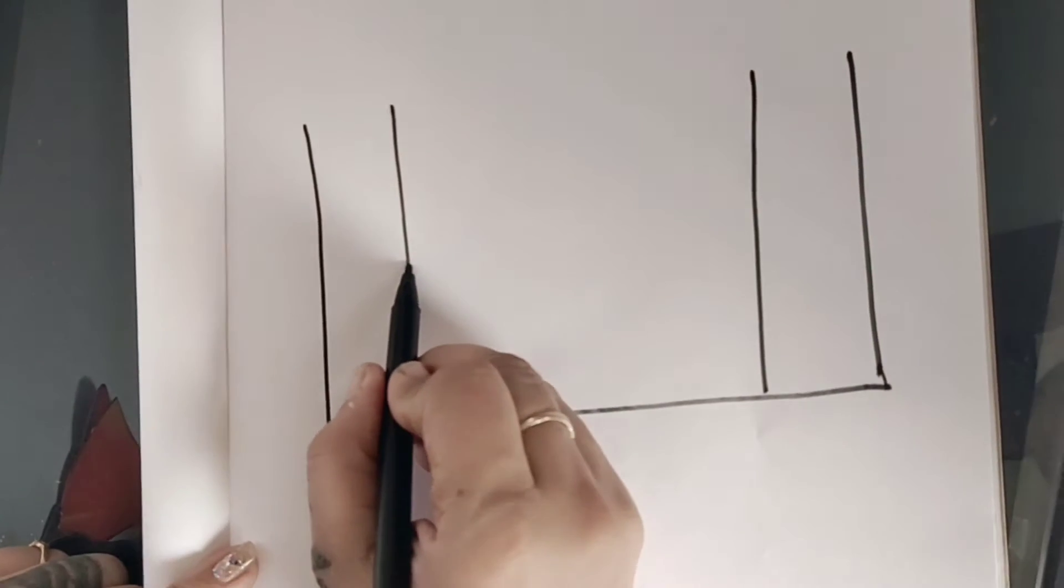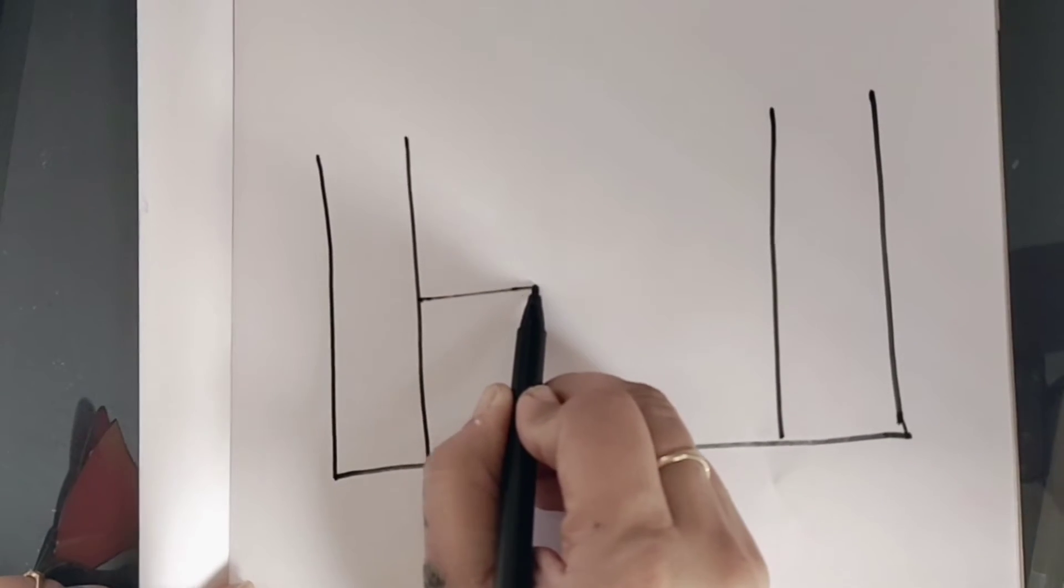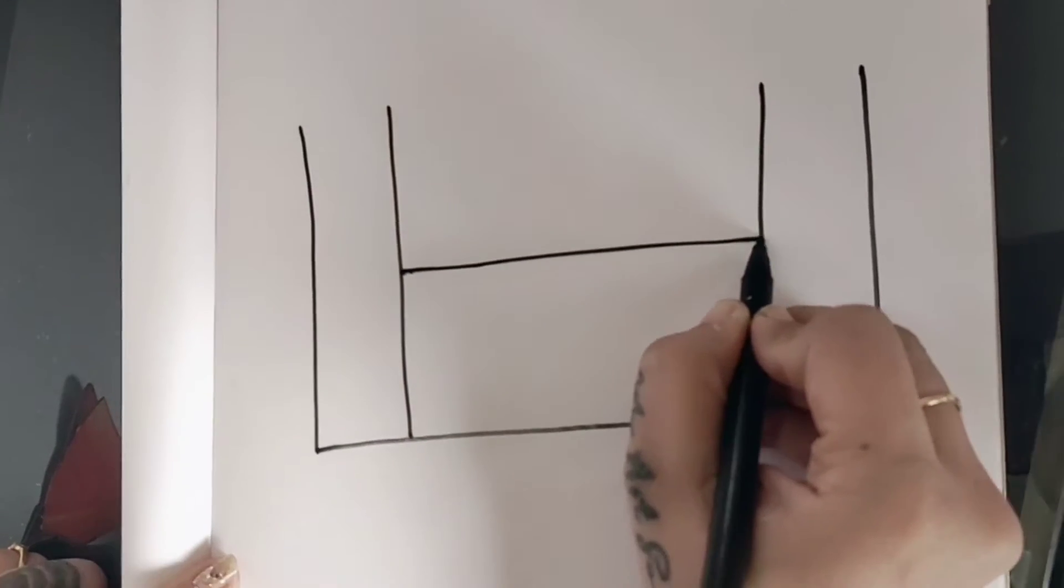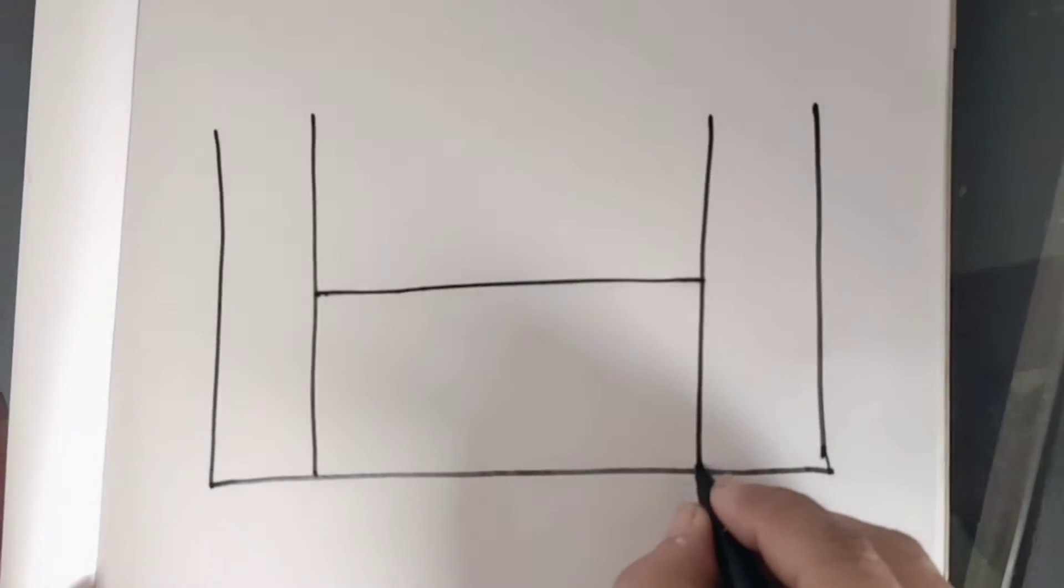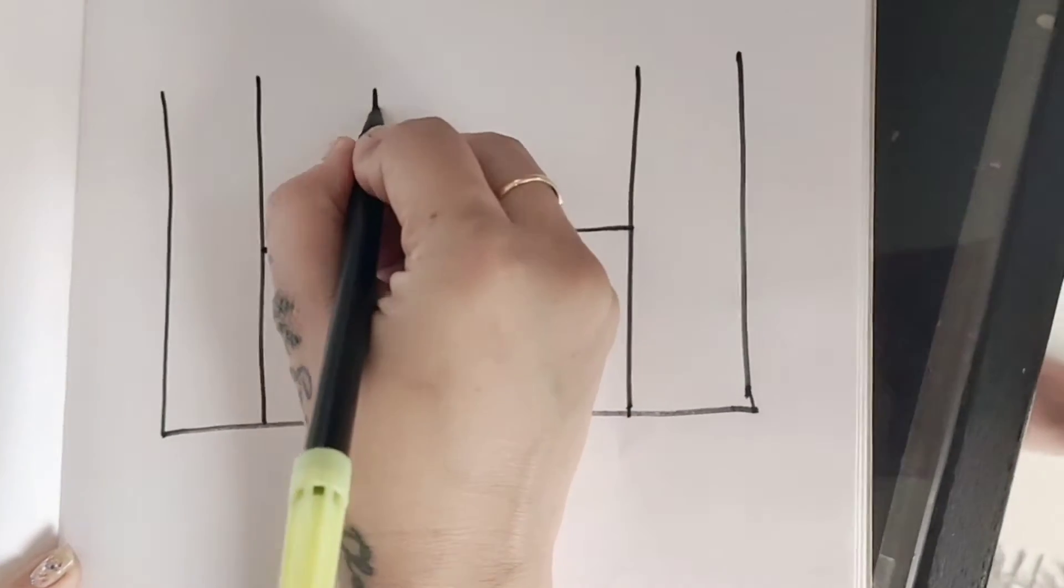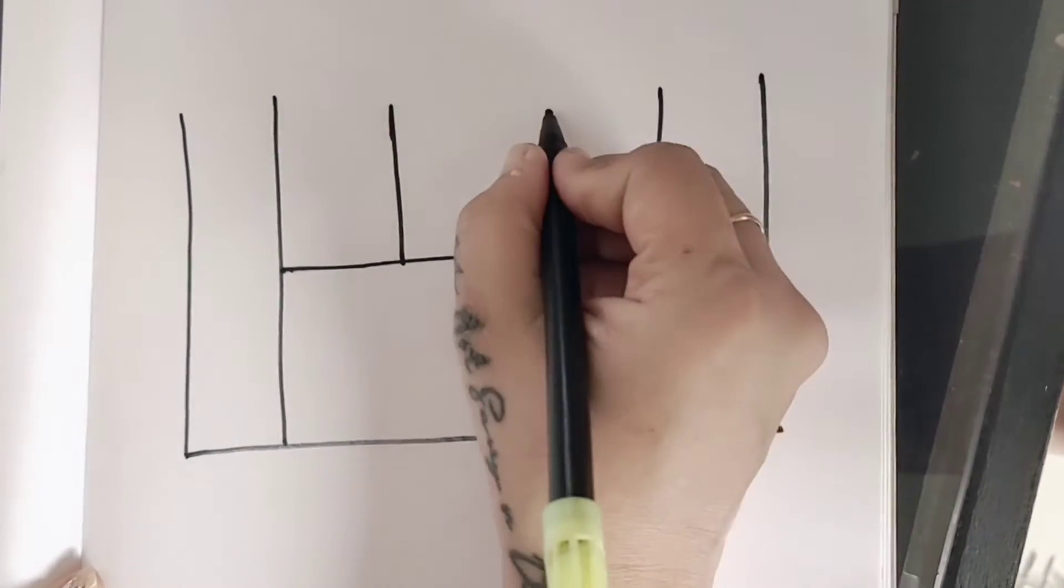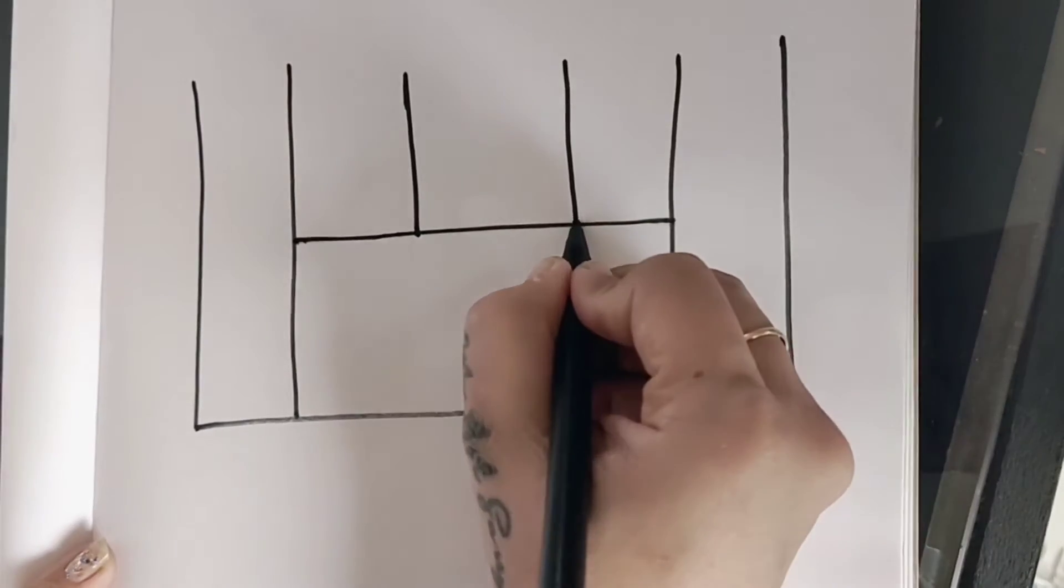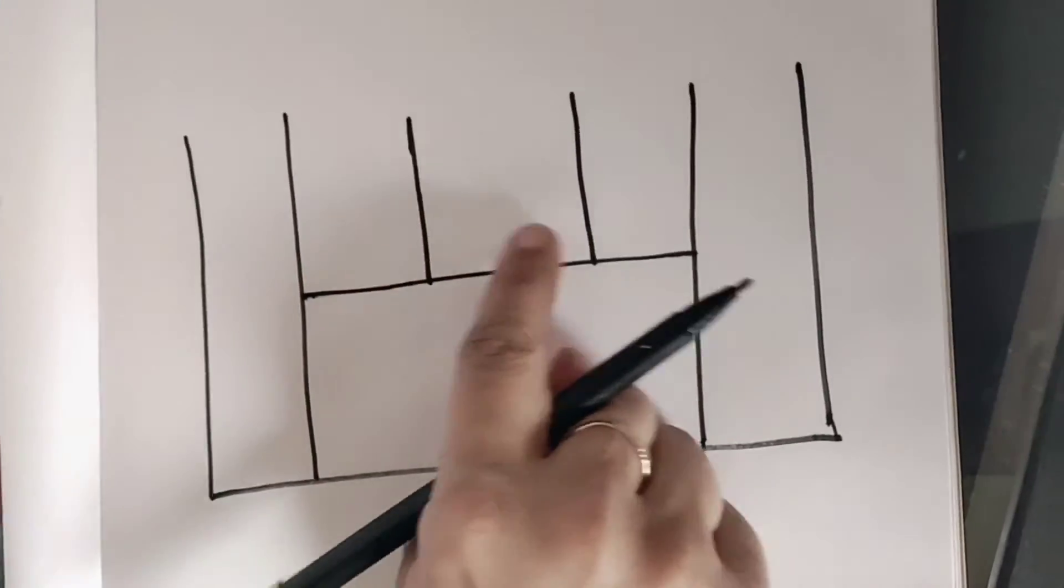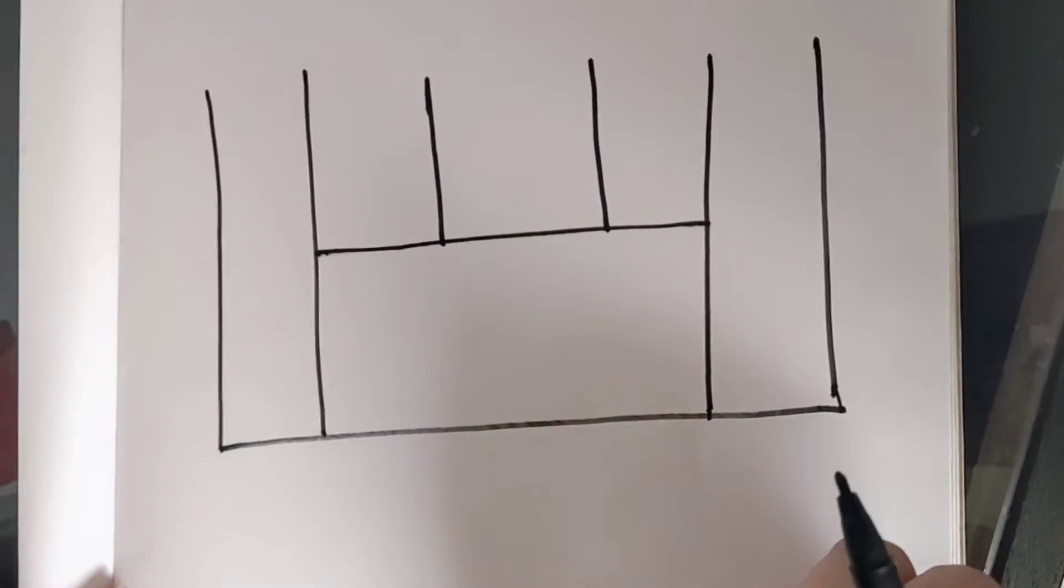Then yahaan center se one more line khichna hai. Like this. Yahaan center se ek line khichna hai. Or in dhono lines ko join kar dhe na hai. Now we will draw two more lines. Yahaan pe hai humko lines aur draw karne hai. Dour-dour karna hai. So isse thodhi aur dour-dour two lines aur draw karne hai.